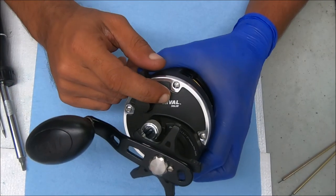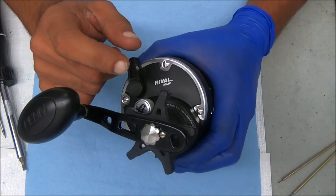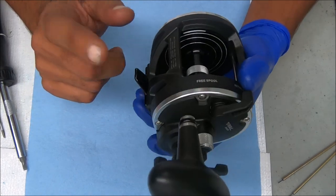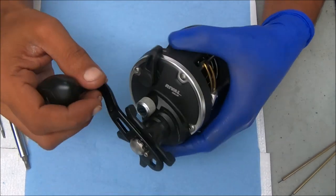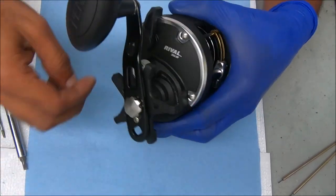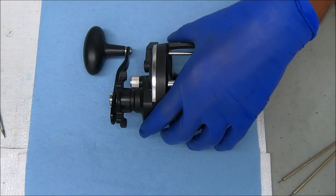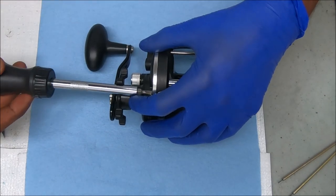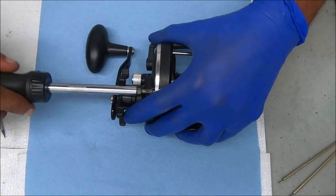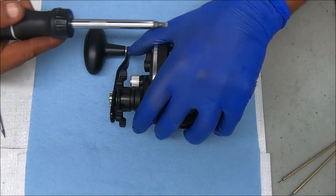Hey y'all, today we have a Penn Rival 30 level wind brand new. Customer bought it and the anti-reverse is not working, so let's find out why. While I open this up guys, please don't forget that subscribe button, that like button, and be sure to tell your friends about the channel.